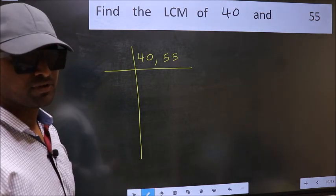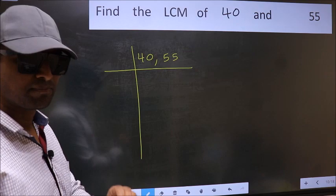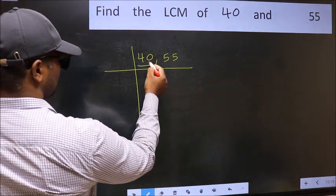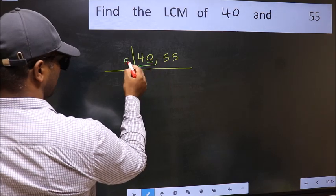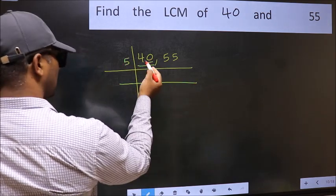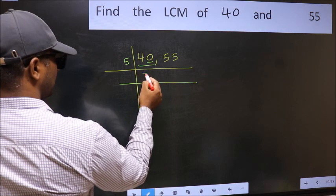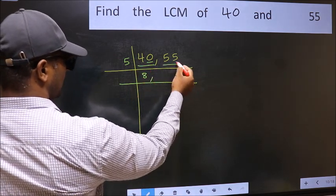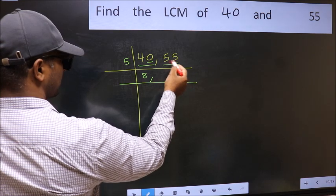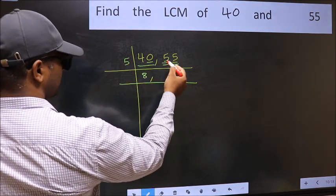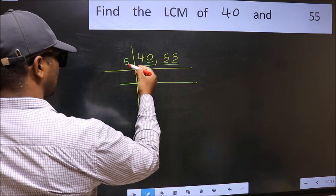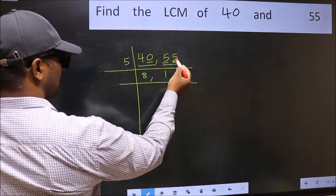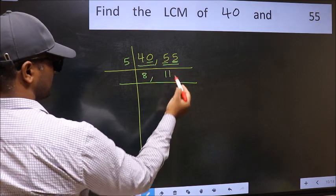Now focus on the first number, which is 40. The last digit is 0, so take 5. When do we get 40 in the 5 table? 5 times 8 is 40. The other number is 55 — last digit 5, so it is divisible by 5. 5 times 1 is 5 for both numbers.